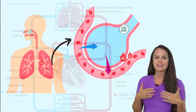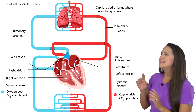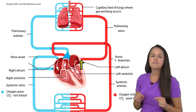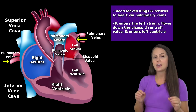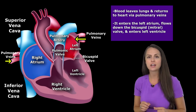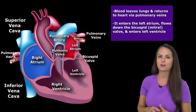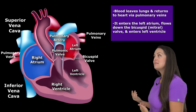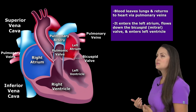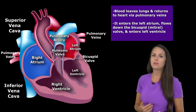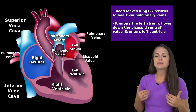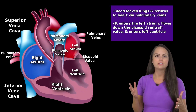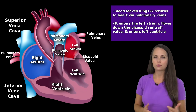That oxygen that you took in is then sent through the pulmonary veins, which take oxygenated blood back to the heart. So now we're on the left side of the heart. The left side deals with oxygenated blood, and its whole goal is to take this oxygenated blood and send it throughout your body to your tissues and your organs.